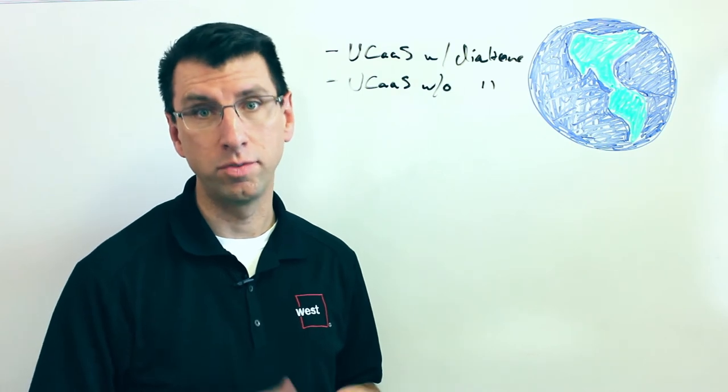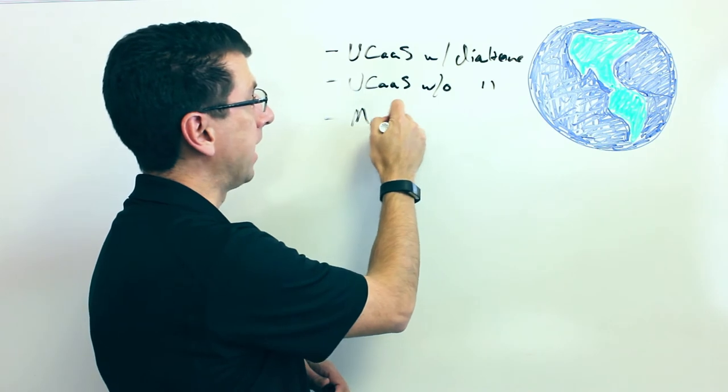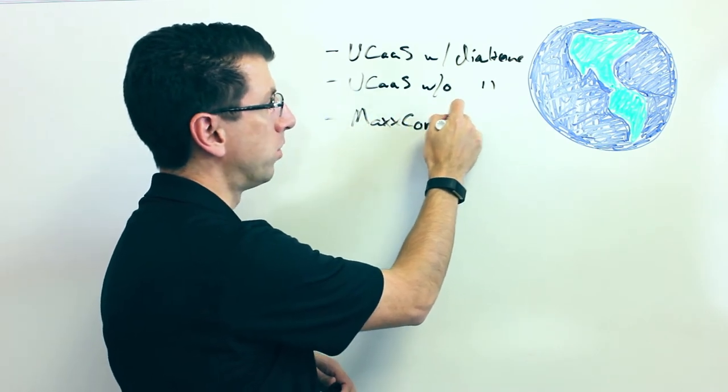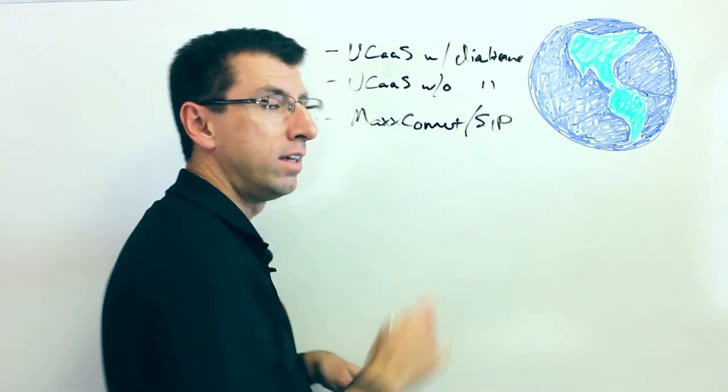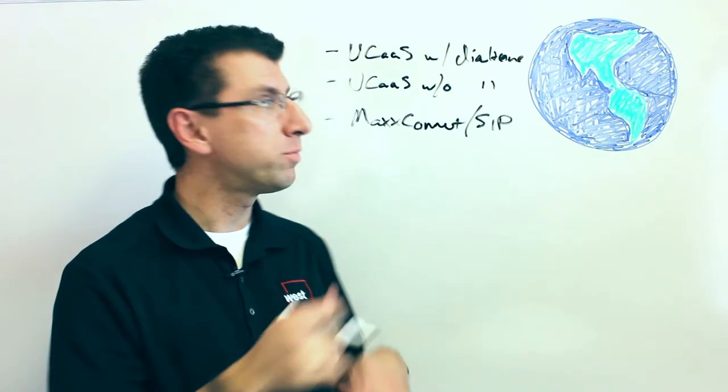The third option is you can go what we call MaxConnect—that's our name for SIP trunking basically—and you can have SIP trunking into an on-premise environment.